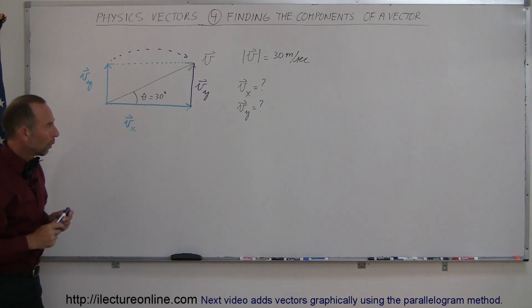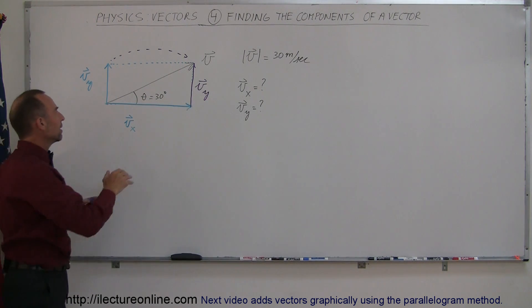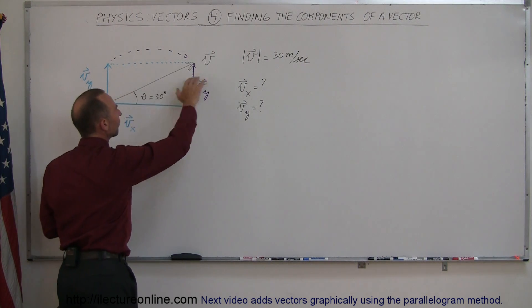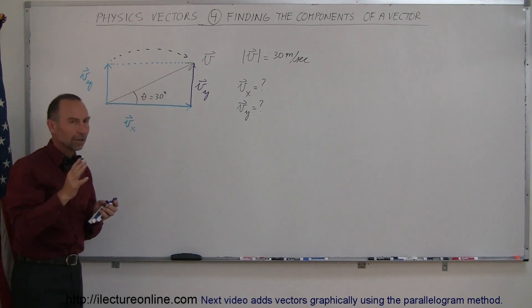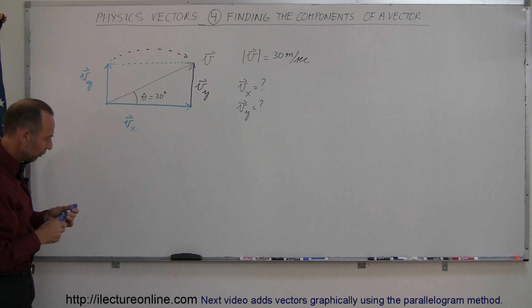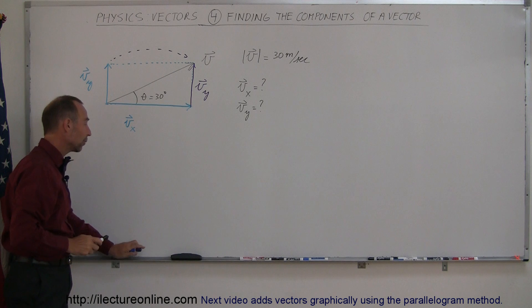Now what are the magnitudes of those? If the velocity itself is 30 meters per second directed to the upper right corner so to speak, what would be the magnitude of v sub x and the magnitude of v sub y? Well that's the key of this video right here.